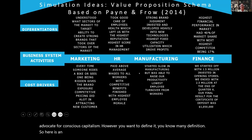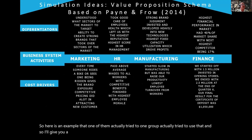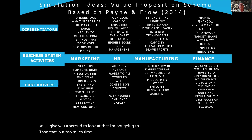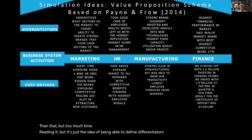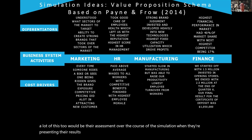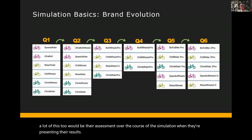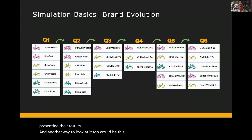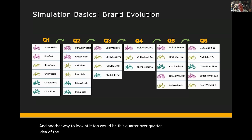Here is an example that one group actually tried to use — I'll give you a second to look at that. It's the idea of being able to define differentiators and cost drivers. A lot of this would be their assessment over the course of the simulation when they're presenting their results. Another way to look at it is this quarter-over-quarter idea of differentiators over time — you start in the first quarter making trade-offs.